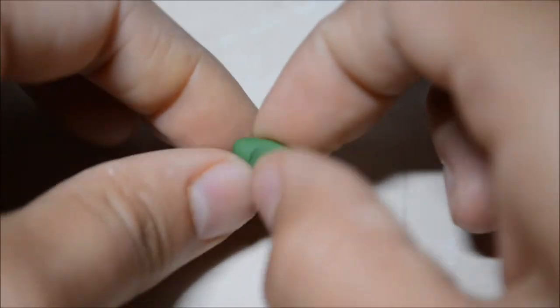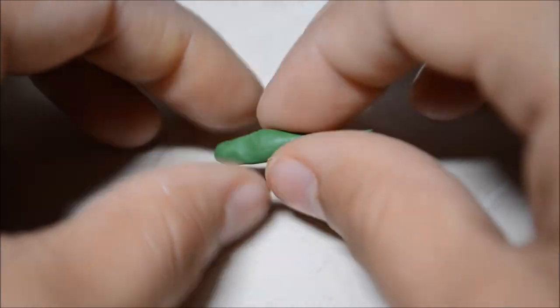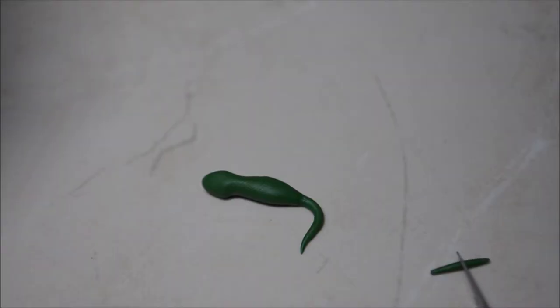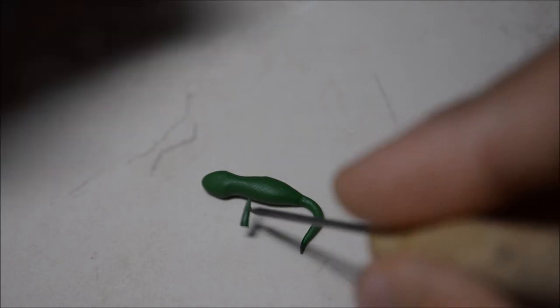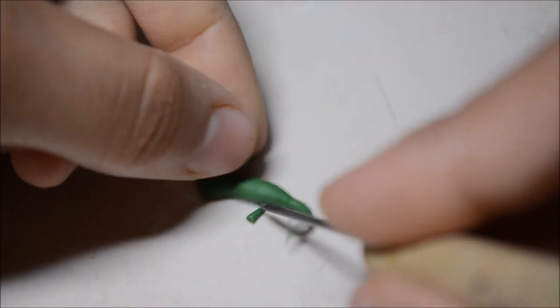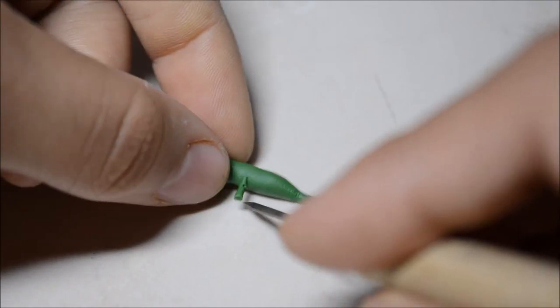And now for the lizard. I just took the darker green and separated a little with my hand and made one side longer, like so. And then just made little snakes and cut those in half for the legs and arms.